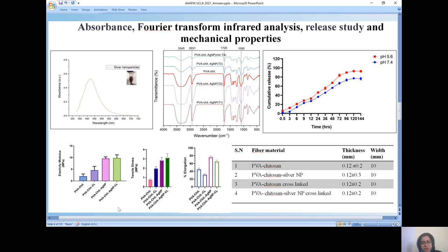Just to confirm the mechanical property, the mechanical strength of the fibers which we obtained, we have seen that the elasticity modulus with respect to percentage elongation was found to be quite good with respect to the cross-linked fiber. And also, when on addition of silver nanoparticles, we have seen that there is a good mechanical strength.